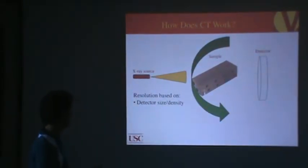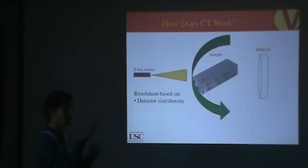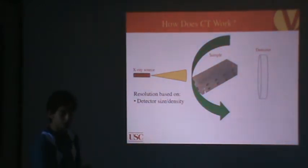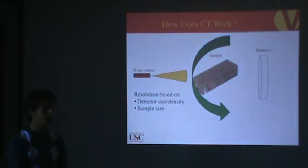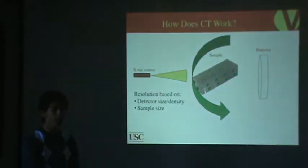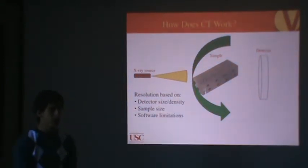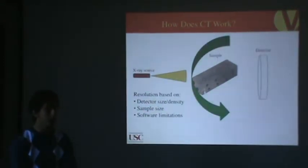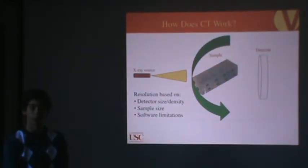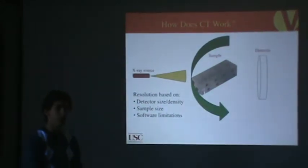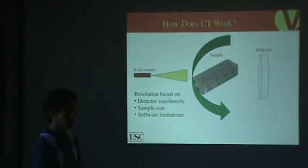Depending on your algorithm, maybe you only have to rotate 180 degrees, maybe you have to go all 360 degrees. But then you can use an algorithm to take these shadows and then recreate the three-dimensional structure of your sample. Resolution is based primarily on detector size and density. How many sensors do you have in your detector? How close are they together? It's also limited by sample size. As you'll see in the paper that I'm about to present, they use the same detector, and depending on sample size, they got either 2 microns per pixel or 7 microns per pixel.